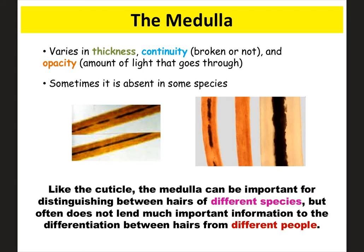The medulla, or middle part, is very important for determining different species, but just like the cuticle, it's not helpful in determining whether a hair came from a specific person. Sometimes the medulla may not even be present at all, and it can vary in thickness or appear broken. So the medulla has variation, but it's not very helpful in identifying a specific individual.